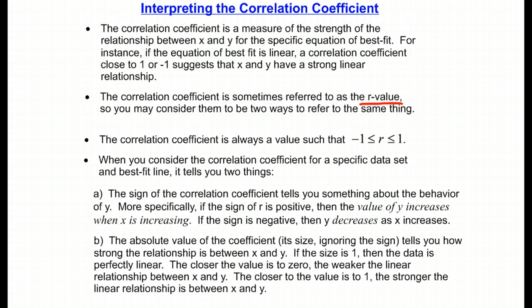The first important idea that you need to know is that the r-value is always going to fall between negative 1 and 1 inclusively. So if anybody tells you that they have a correlation coefficient of 2 or negative 1.2, you know for certain that there is a mistake there.